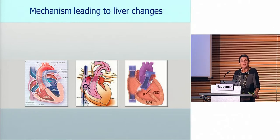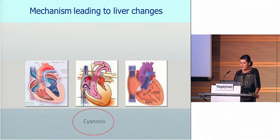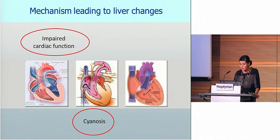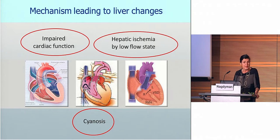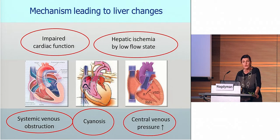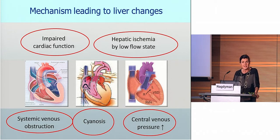Which mechanisms lead to this in these three patient groups? We are talking about cyanosis, impaired cardiac function, hepatic ischemia by low-flow state, systemic venous obstruction — especially in Zenning and Fontan patients — and, of course, elevated central pressure, especially in Fontan patients.